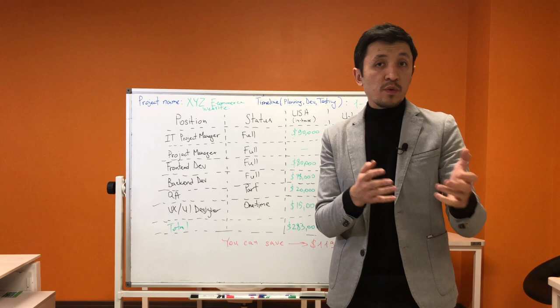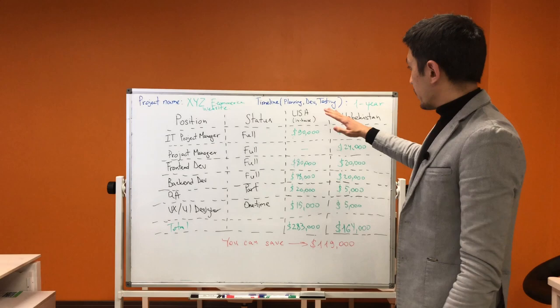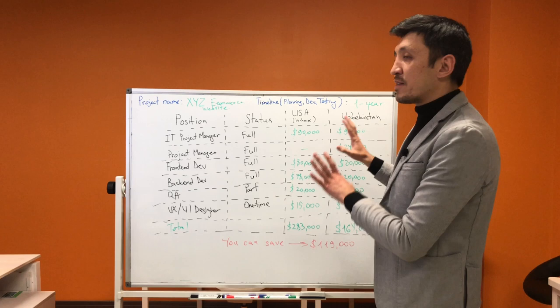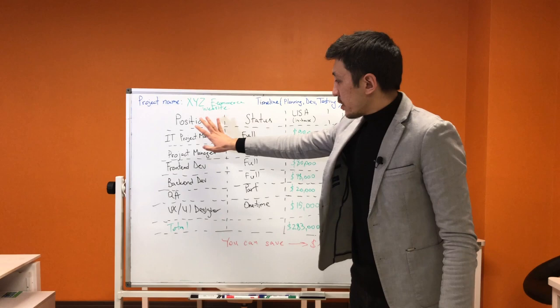For example, like Gymshark or Warby Parker. Your business model will be a D2C model. The project name is XYZ, duration is one year—planning, development, testing, everything will take one year. These are the employees you'll need. Please note this is a really simplified version; if we go deeper, a short video won't be enough, it would take an hour.